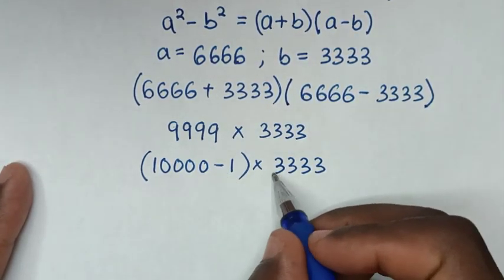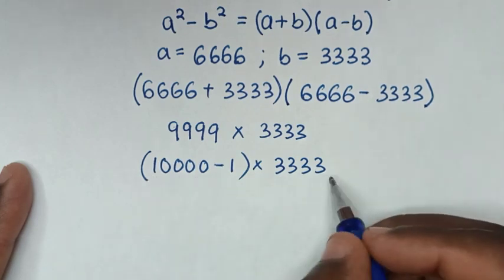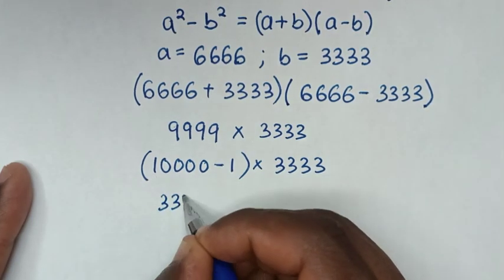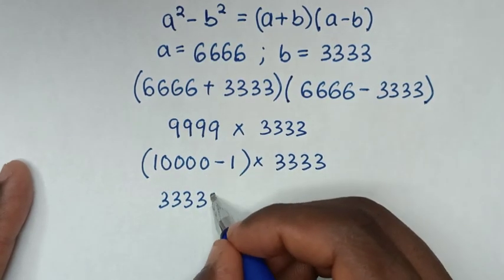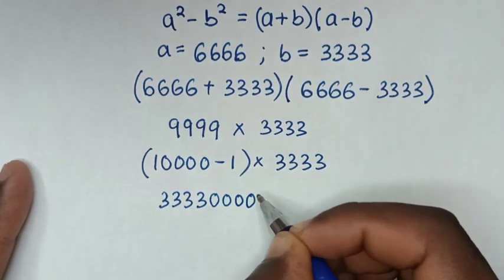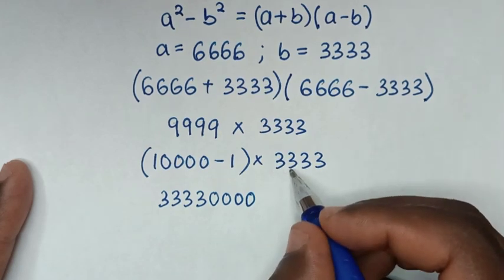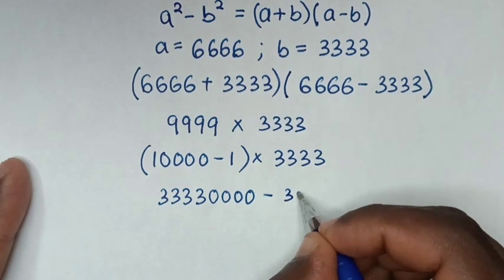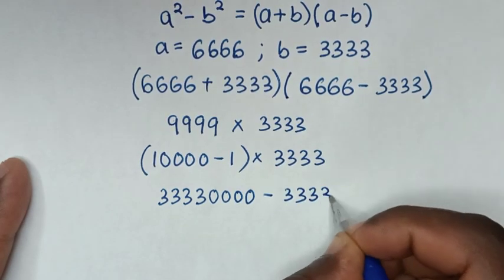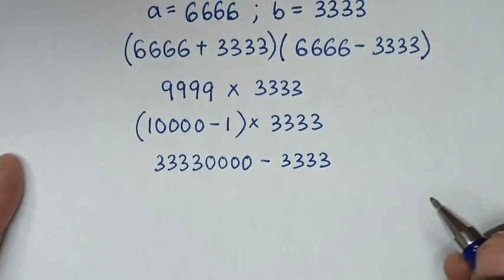Distributing, we get 3,333 times 10,000 which equals 33,330,000, then minus 3,333 times 1 which is negative 3,333.